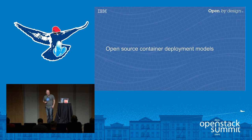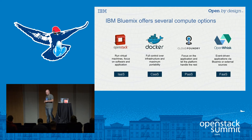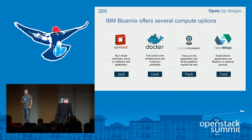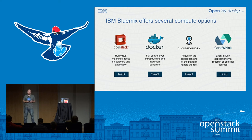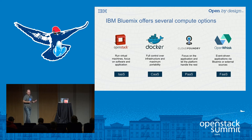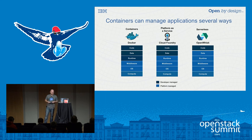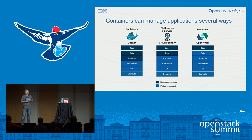In the IBM case, we are big proponents of OpenStack. There are at least four options you have with Bluemix for deploying applications, each taking a slightly different point of view: infrastructure as a service with OpenStack, a Docker container cloud, Cloud Foundry platform as a service, and a new model for functions as a service with OpenWhisk. Even though they're all backed by containers on Bluemix, they take a slightly different point of view depending on how you, the developer, want to approach your application and how much control you want.